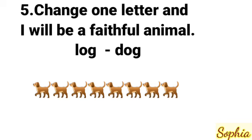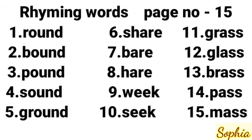Children, do this exercise in your English book. Next, page number 15: rhyming words. Round, bound, sound, ground. Share, bear, hair. Weak, seek. Grass, glass, brass, pass, mass. These are same-sound words. Same-sound words are called rhyming words. Children, learn and write these rhyming words in your English copy.